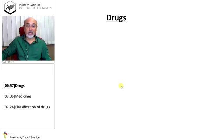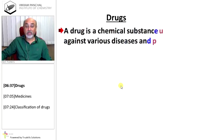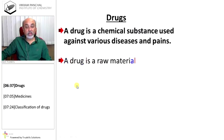What is a drug? This word is often misused. A drug is a chemical substance used against various diseases and pains. A drug is a raw material of medicine.